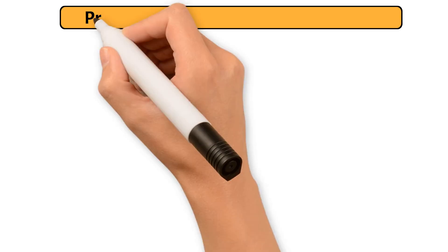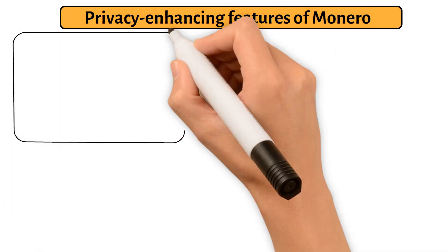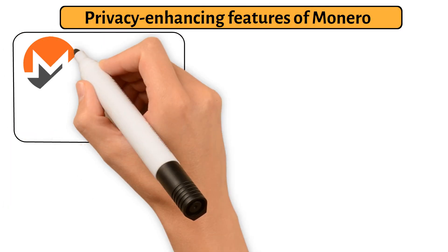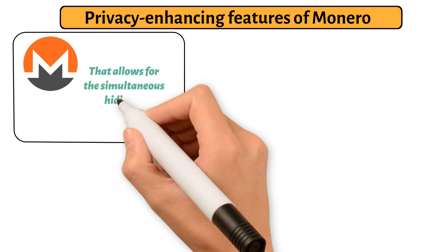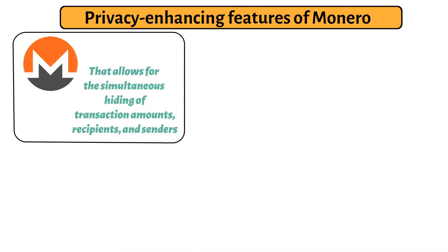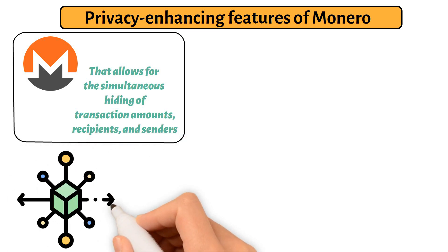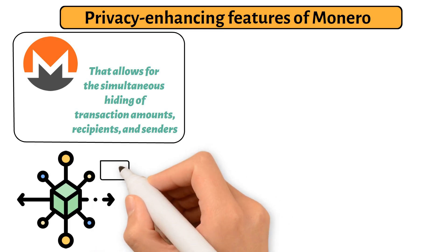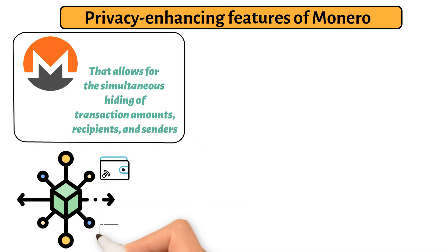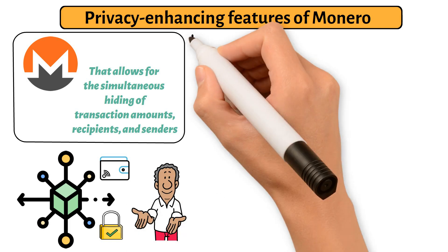Monero is digital money that allows for the simultaneous hiding of transaction amounts, recipients, and senders. The primary objective of this project is to create a decentralized system that offers its transactions anonymity and privacy. These are some of the ways that this is accomplished.